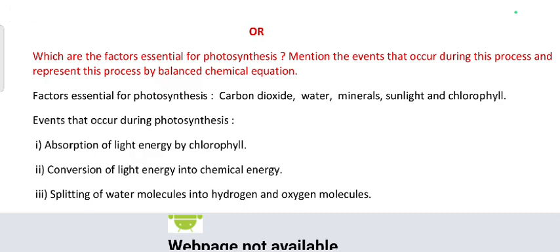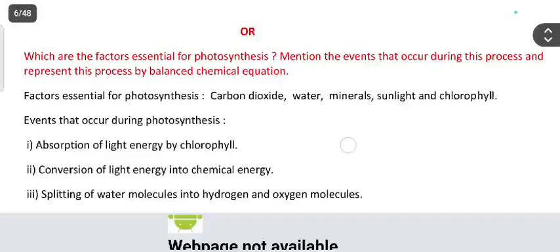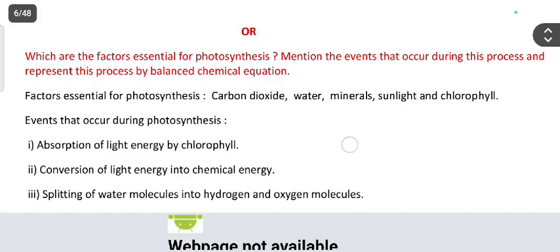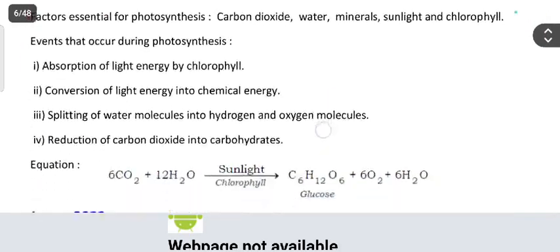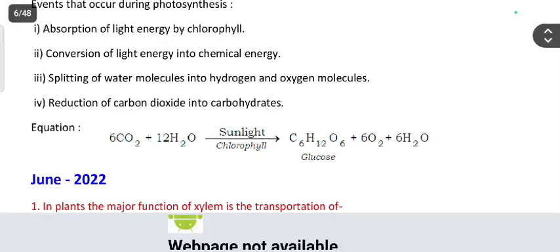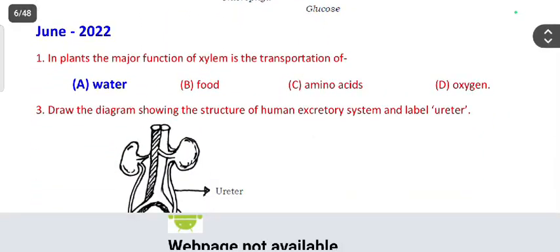Next question: which are the factors essential for photosynthesis? Mention the events that occur during this process and represent the process by a balanced chemical equation. The answer with chemical equation is provided. From June 2022 multiple choice: in plants, the major function of xylem is the transportation of water.